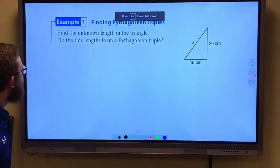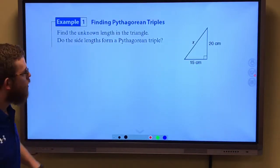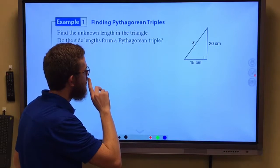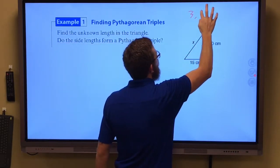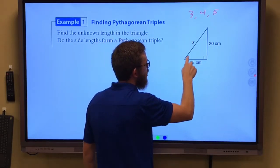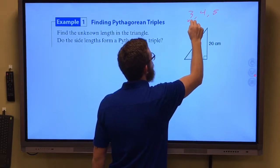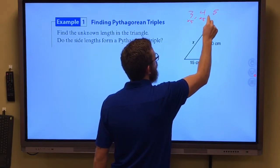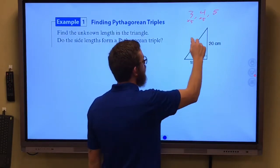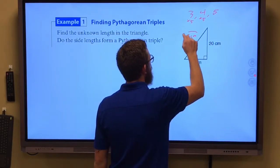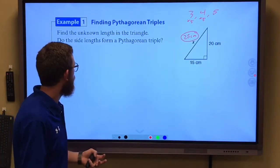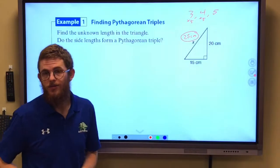If we take a look at this, it says find our unknown length in our triangle. We have 15, 20, we're looking for our missing side. Think about our common Pythagorean Triples, 3, 4, 5. It looks like 3 was multiplied by 5 to get 15. 4 was multiplied by 5 to get 20. And so, 5 must be also multiplied by that same constant value there to get 25 centimeters. That is our missing length of that side. We could use Pythagorean Theorem, but this can save us some time.